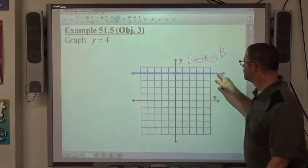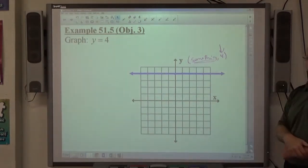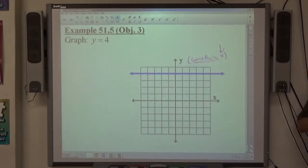So we get this nice horizontal line, y equals 4. The most common mistake I see is people see y equals 4, they put a dot at 0, 4. They don't graph a line, they just graph a dot.